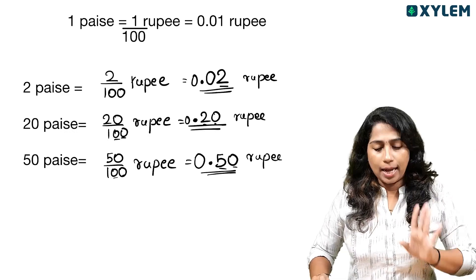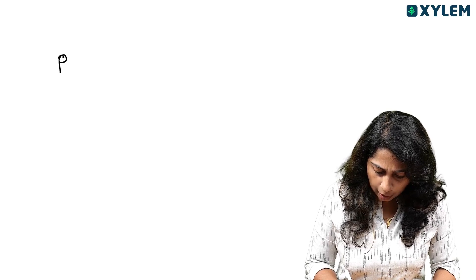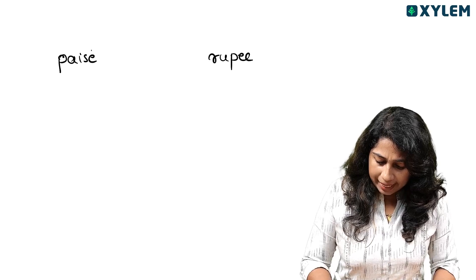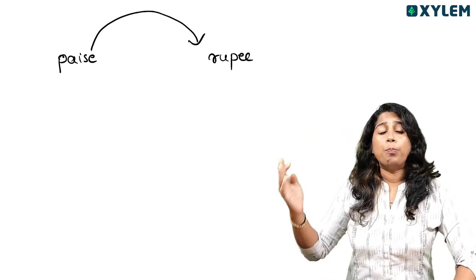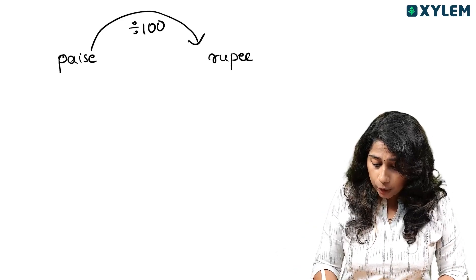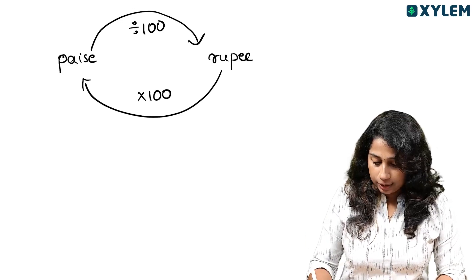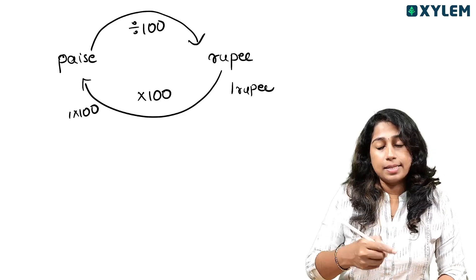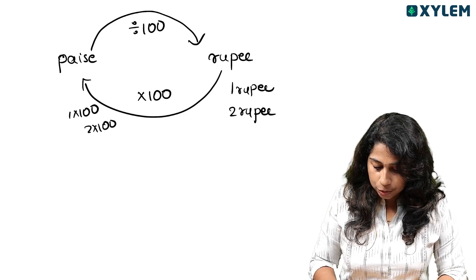Divided by 100 — let's do a simple example. Let's do a price here. This price will count as rupees. The price means divided by a hundred. So 1 into 100 is 100 paise. 2 into 100 is 200 paise.